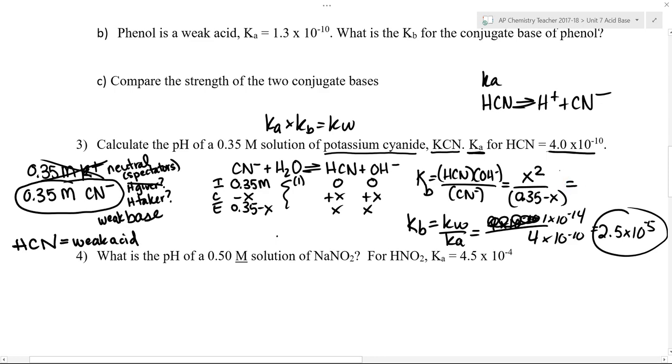So this reaction, CN minus acting as a base, has a Kb value of 2.5 times 10 to the negative fifth. I'm going to rearrange that and solve for X. And I end up with an X value of 3.0 times 10 to negative third when I round it to two sig figs.